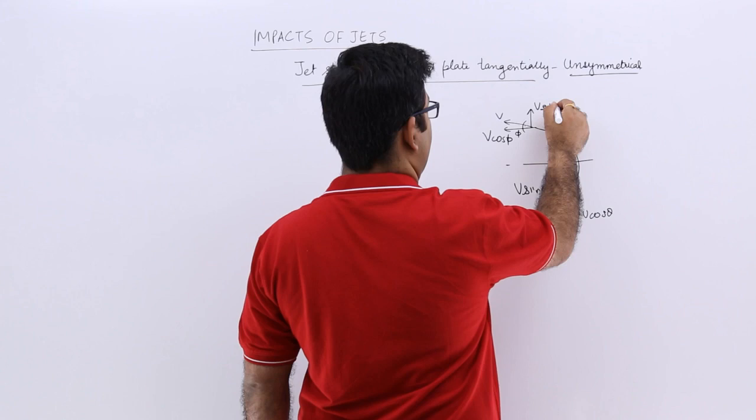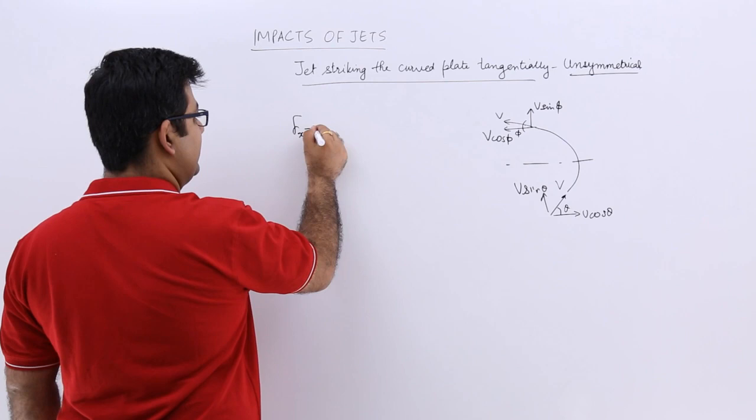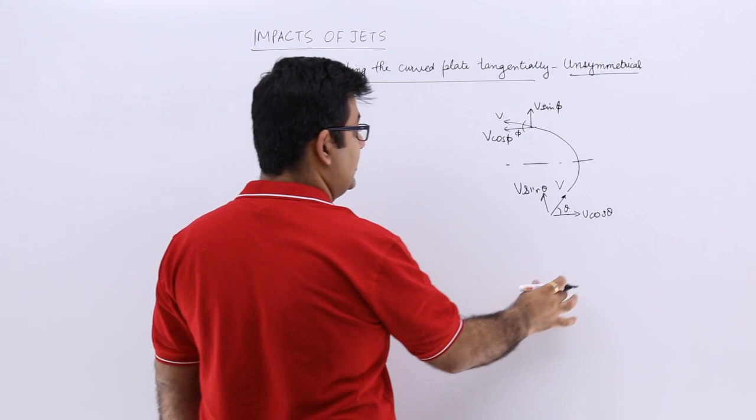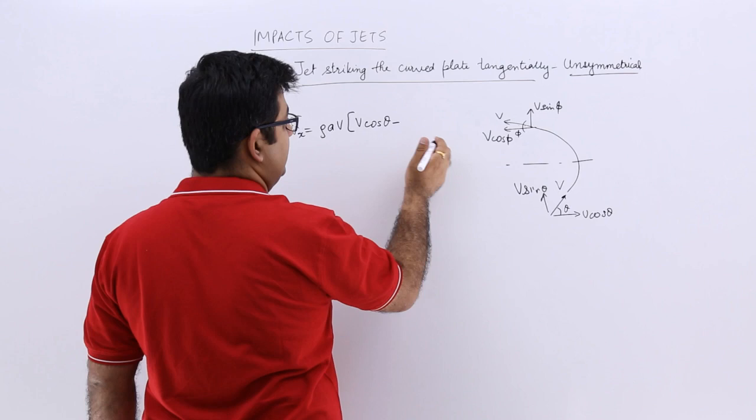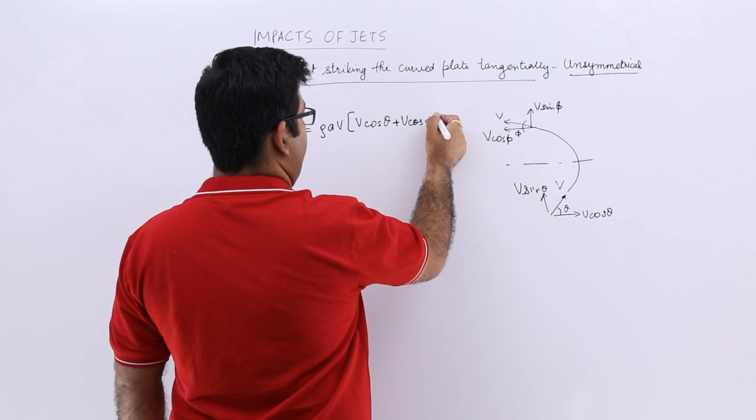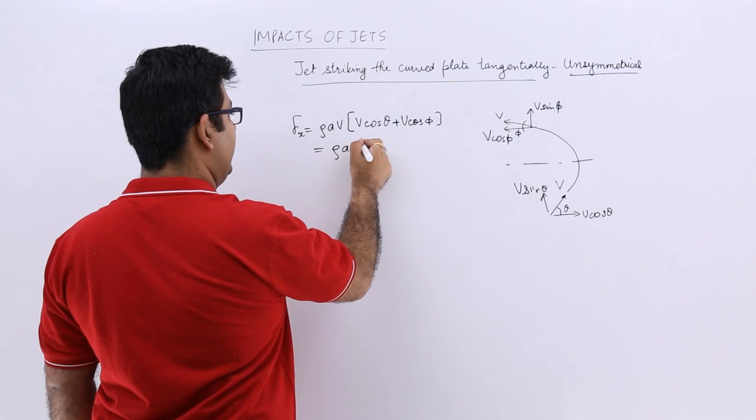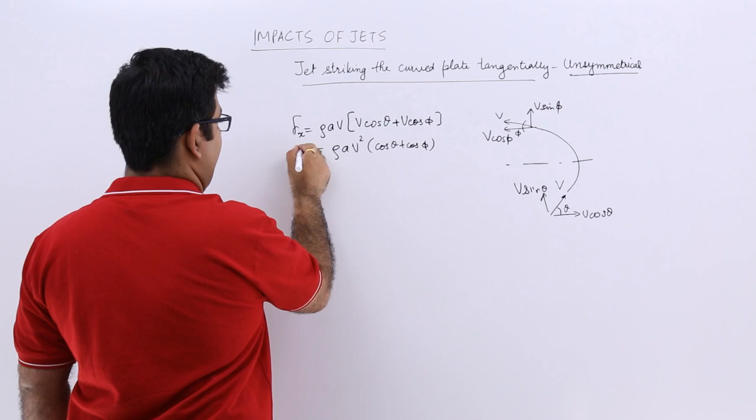So again we'll use the same thing, so fx is equal to rho a into V into V1x, so V1x is V cos theta and this would be minus minus, which becomes plus V cos phi. You can take V common and this would be rho a V square into cos theta plus cos phi. So that is fx.